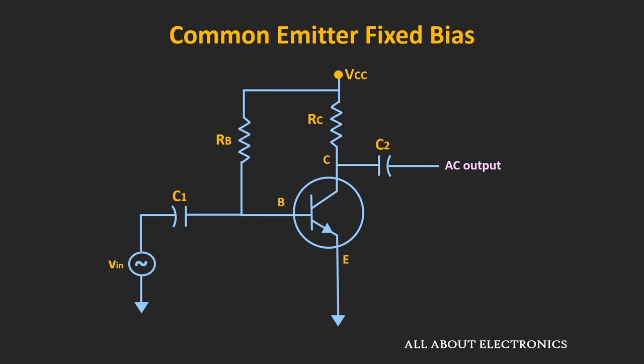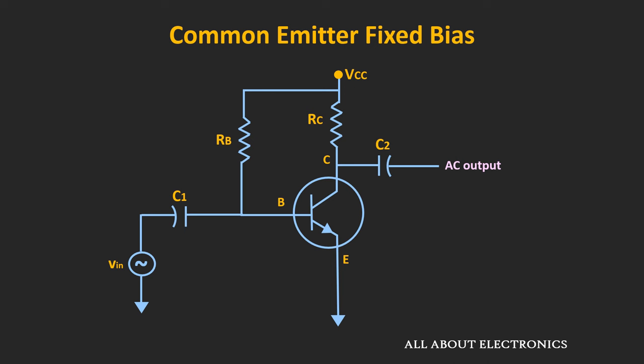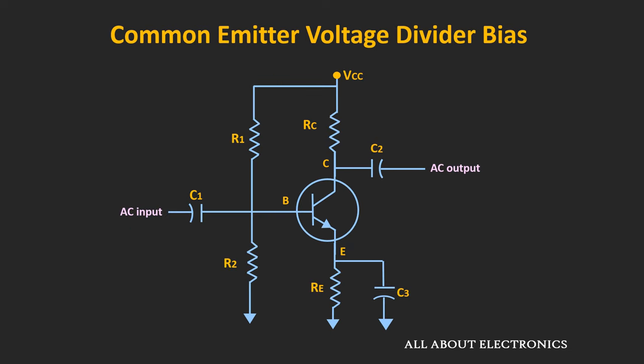So far during the small signal analysis, either there was no emitter resistor in the BJT circuit or it acted as a short circuit during the AC analysis. For example, in the fixed bias circuit there wasn't any emitter resistor, while in the voltage divider biasing circuit there was a bypass capacitor in parallel with the emitter resistor. Because of this bypass capacitor during the AC analysis, this emitter resistor acted as a short circuit. But if there is no bypass capacitor in the circuit, then the AC analysis as well as the expression of the voltage gain and the input impedance will change quite a bit. When this bypass capacitor is not used, let's see the effect of this emitter resistor on the small signal analysis.